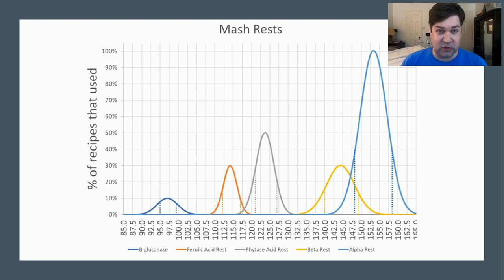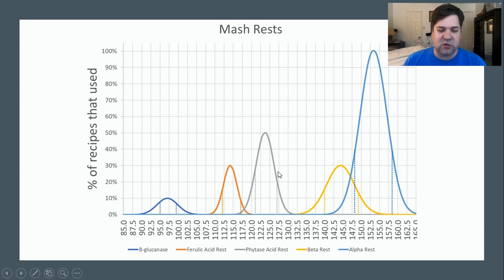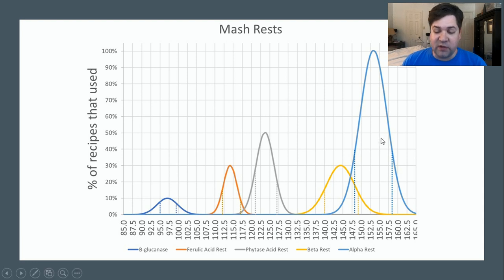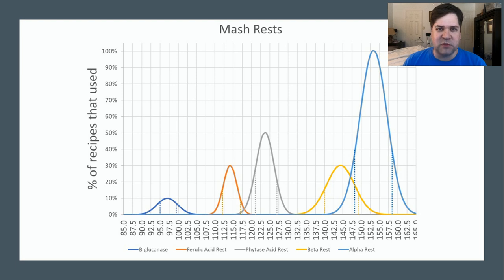Another type of graph I'm going to show uses the same bell curves. This plot shows the mash rests for Hefeweizen, from the beta-glucanase rest all the way up to the alpha and beta rests. I've manipulated the height of each bell curve to show how many recipes used those specific rests. Of course, 100% used the alpha rest; however, only 50% of the recipes did a protein rest. Each curve also shows the lower and upper bounds of the data set.